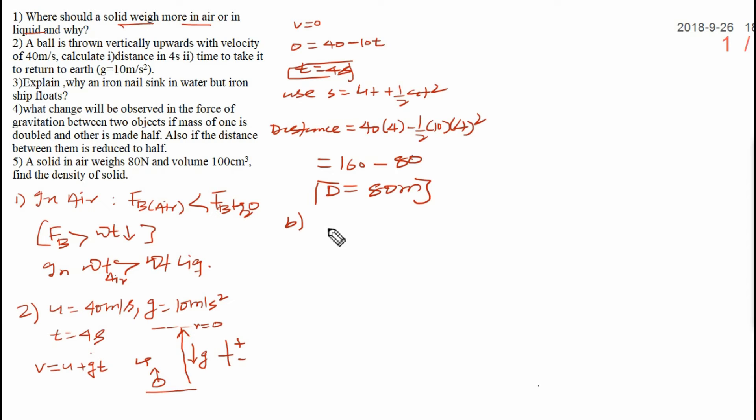Now you need to find out the second part. Time required to return back on the earth. You know total time is what? Time of ascent upward direction and time of descent, that is downward direction. Time of ascent is 4 seconds. They are equal in free fall motion. That's why 4 plus 4, you will get 8 seconds is the answer.